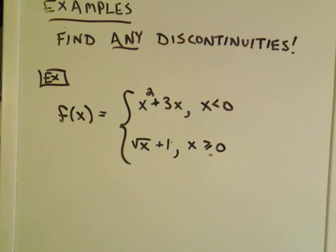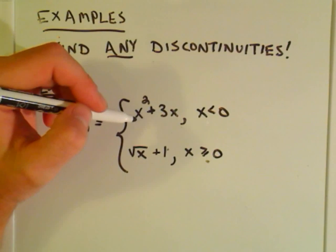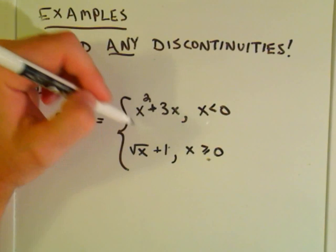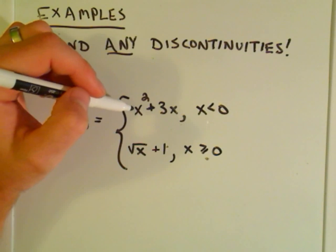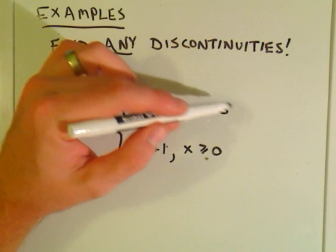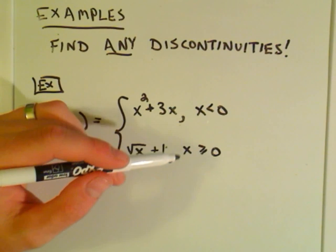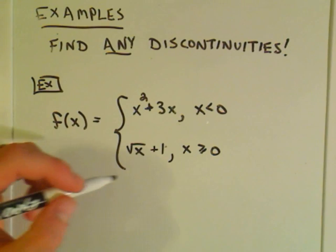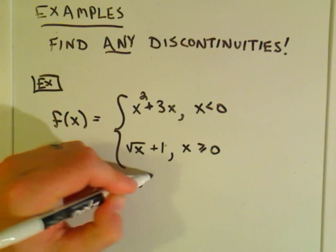In these problems we're basically going to find any discontinuities that might exist. In this problem we have a piecewise defined function. Our first function is a polynomial, x squared plus 3x — by the result we just talked about, this is continuous everywhere, defined for values less than 0. Likewise, square root of x plus 1 is a root function, continuous for x greater than or equal to 0. The only place where there might be a discontinuity is at x equals 0.